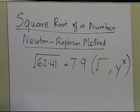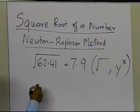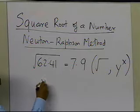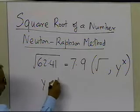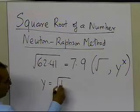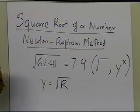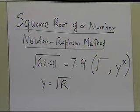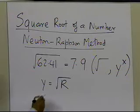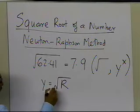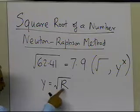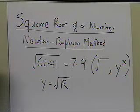The most common algorithm is as follows: if you are trying to find the square root of a number r, let's suppose y is equal to the square root of r. So what you are trying to do is find the value of y — if you are able to find the value of y, you have basically found out what the square root of r is.